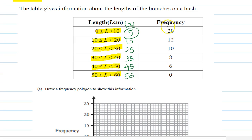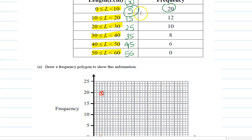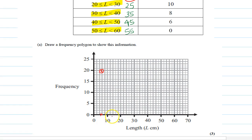Let's plot this. Our first point is 5 and 20, so on the x-axis this is 5 and the frequency is 20 — we mark that point. Next value is 15 and 12. So 15 is here on the x-axis and 12 is just above 10, so we mark that point.